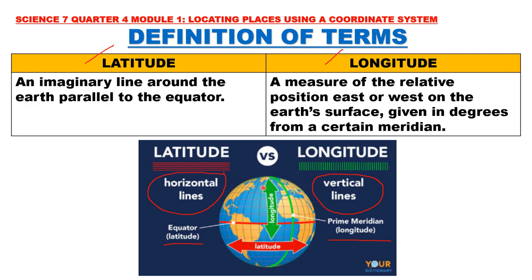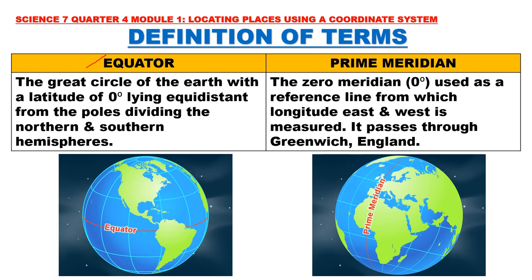In this picture, this is our equator — all the lines that are parallel to the equator are called latitude. This is the prime meridian — all lines that are parallel to the prime meridian are called longitude. The equator is the great circle of the Earth at latitude zero degrees, lying equidistant from the poles, dividing the northern and southern hemispheres. The prime meridian is the zero meridian used as a reference line from which longitude east and west is measured. It passes through Greenwich, England. The equator divides the northern and southern hemispheres, located at latitude zero degrees, whereas the prime meridian is located at longitude zero degrees.